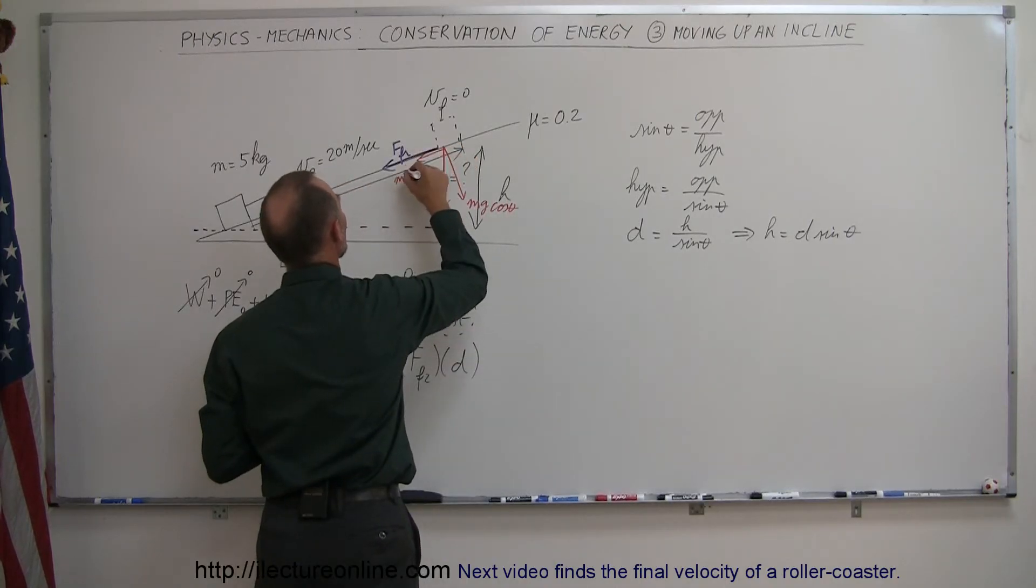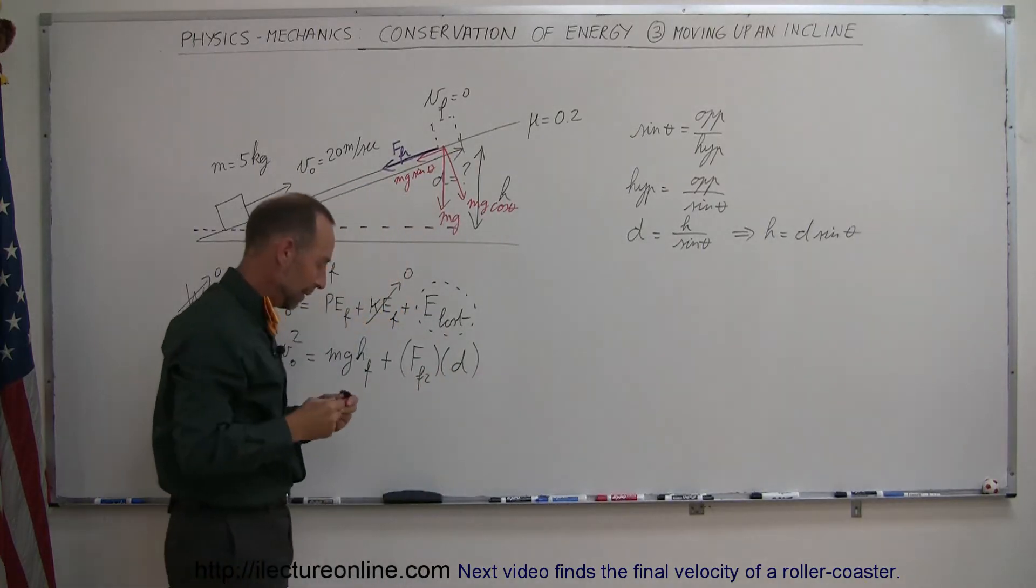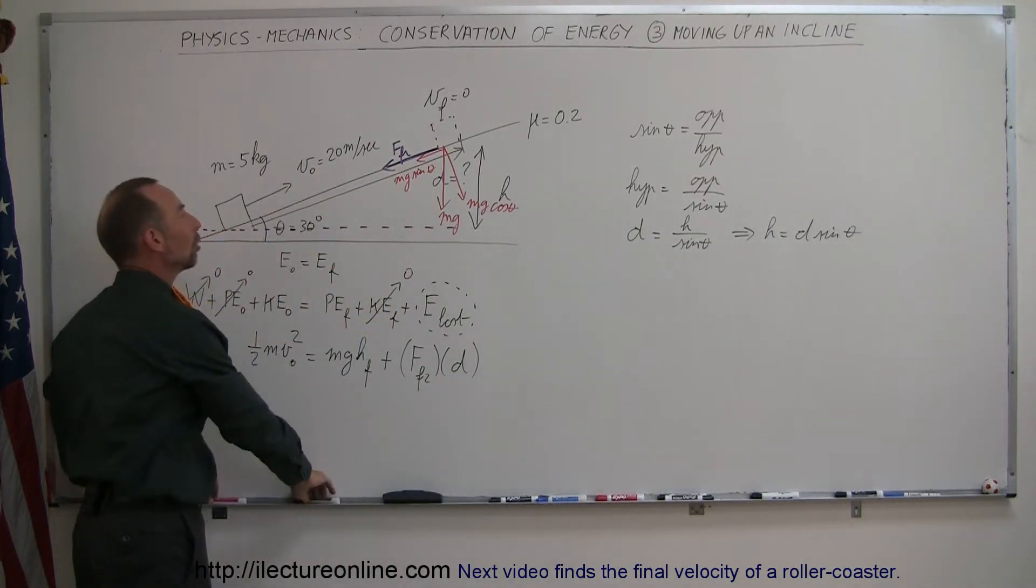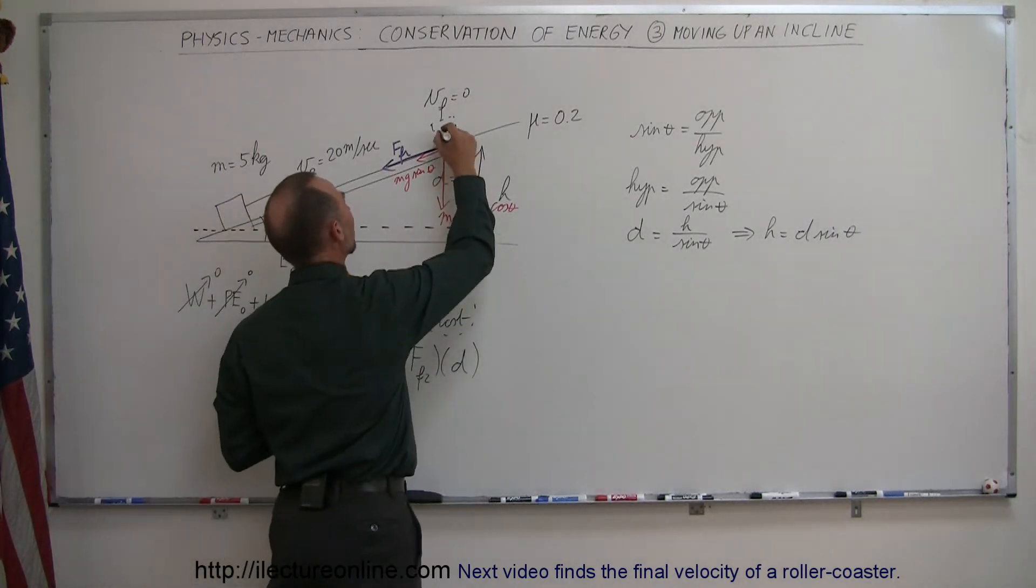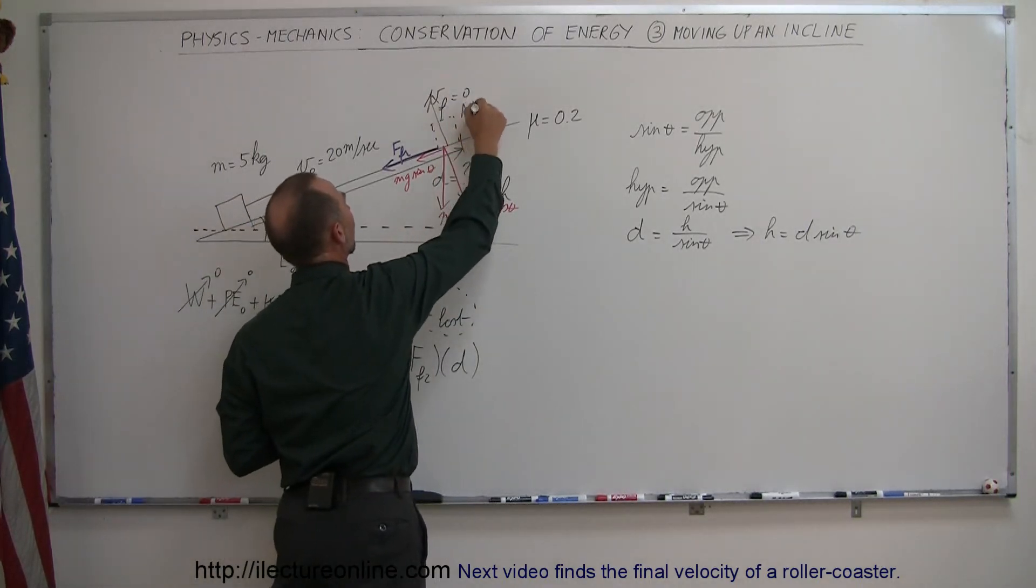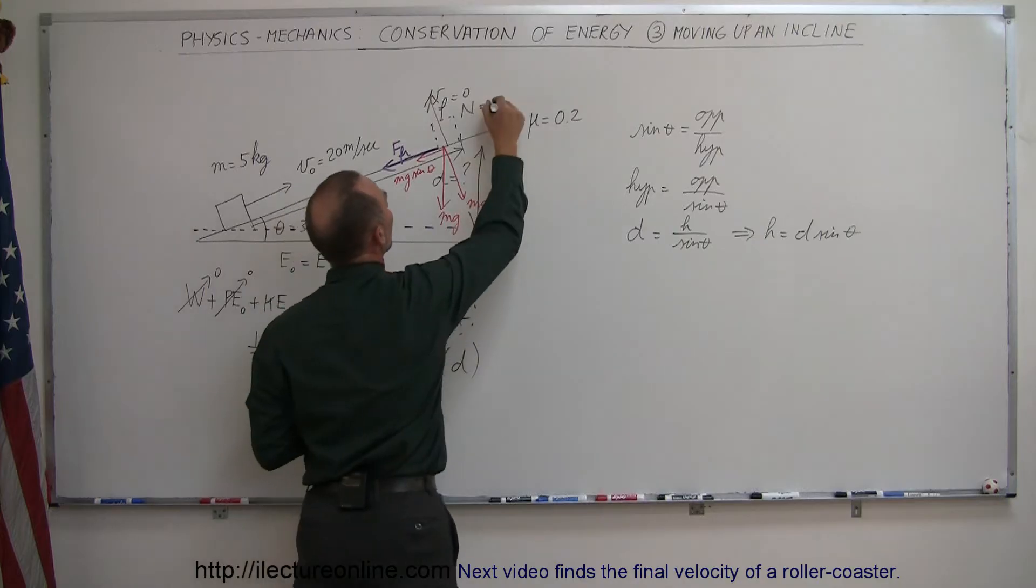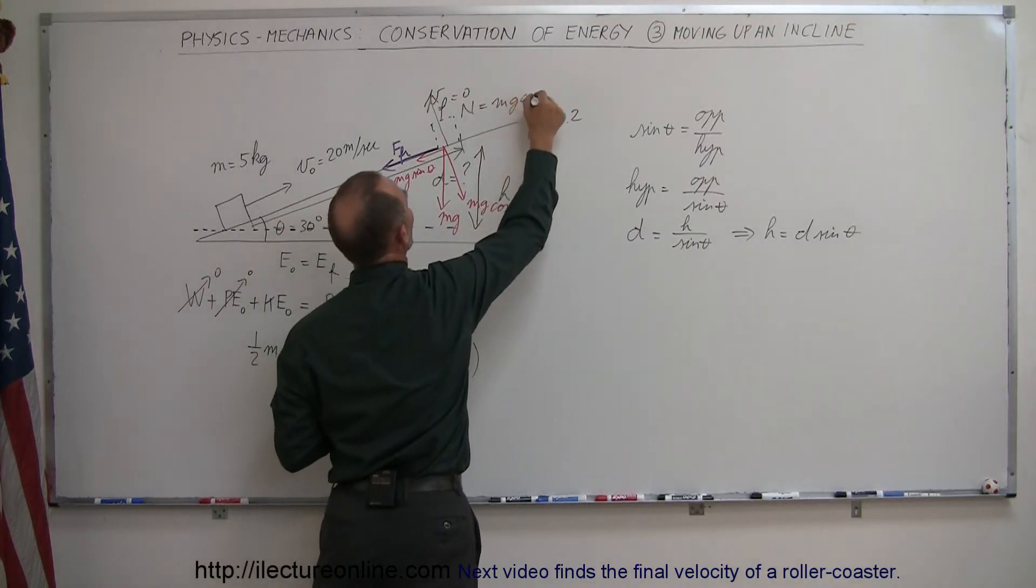And then, of course, we have the mg sine of theta that's parallel to the incline. Then, of course, we have the normal force, which is the incline pushing back on the object. That's the normal force. And that's going to be equal in magnitude to the mg cosine of theta.